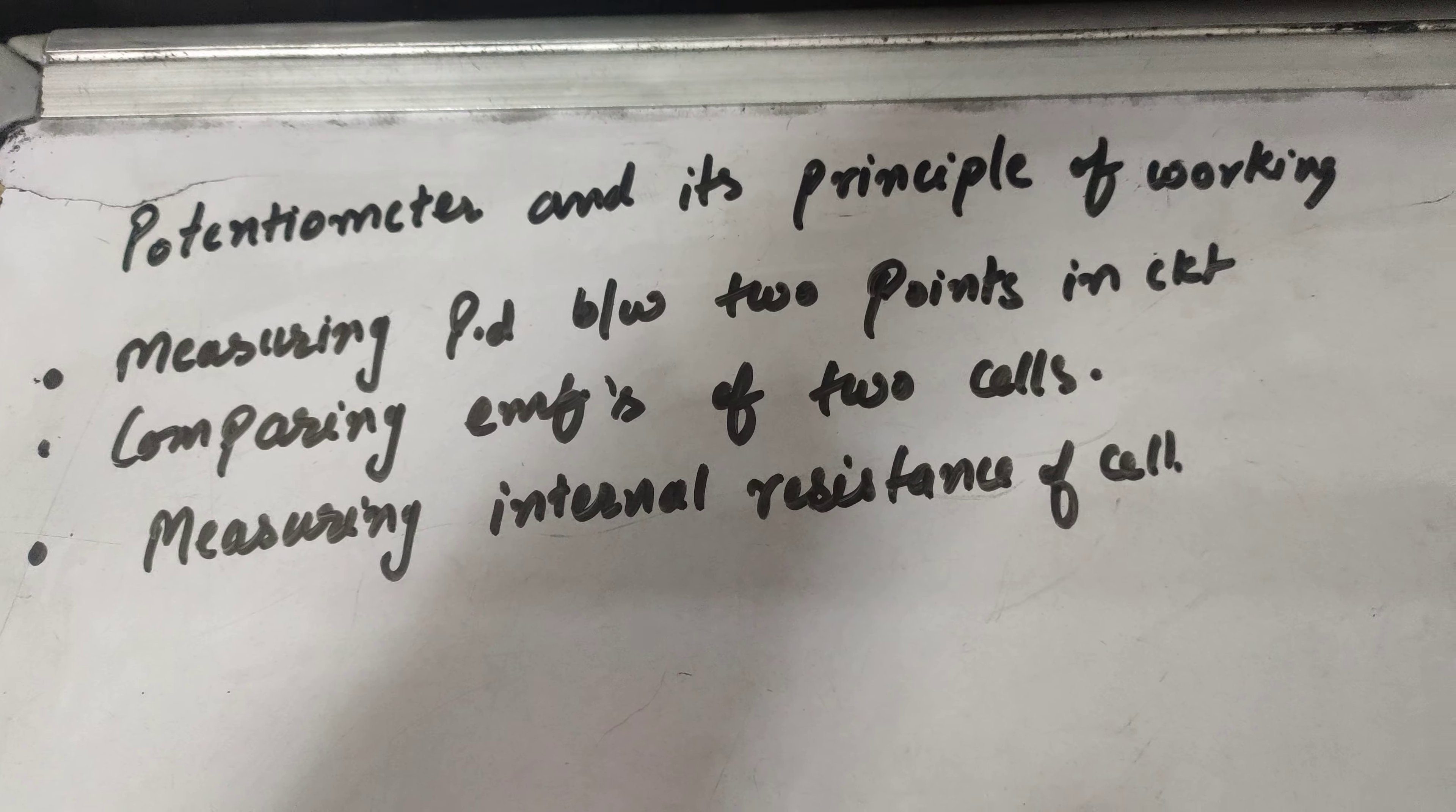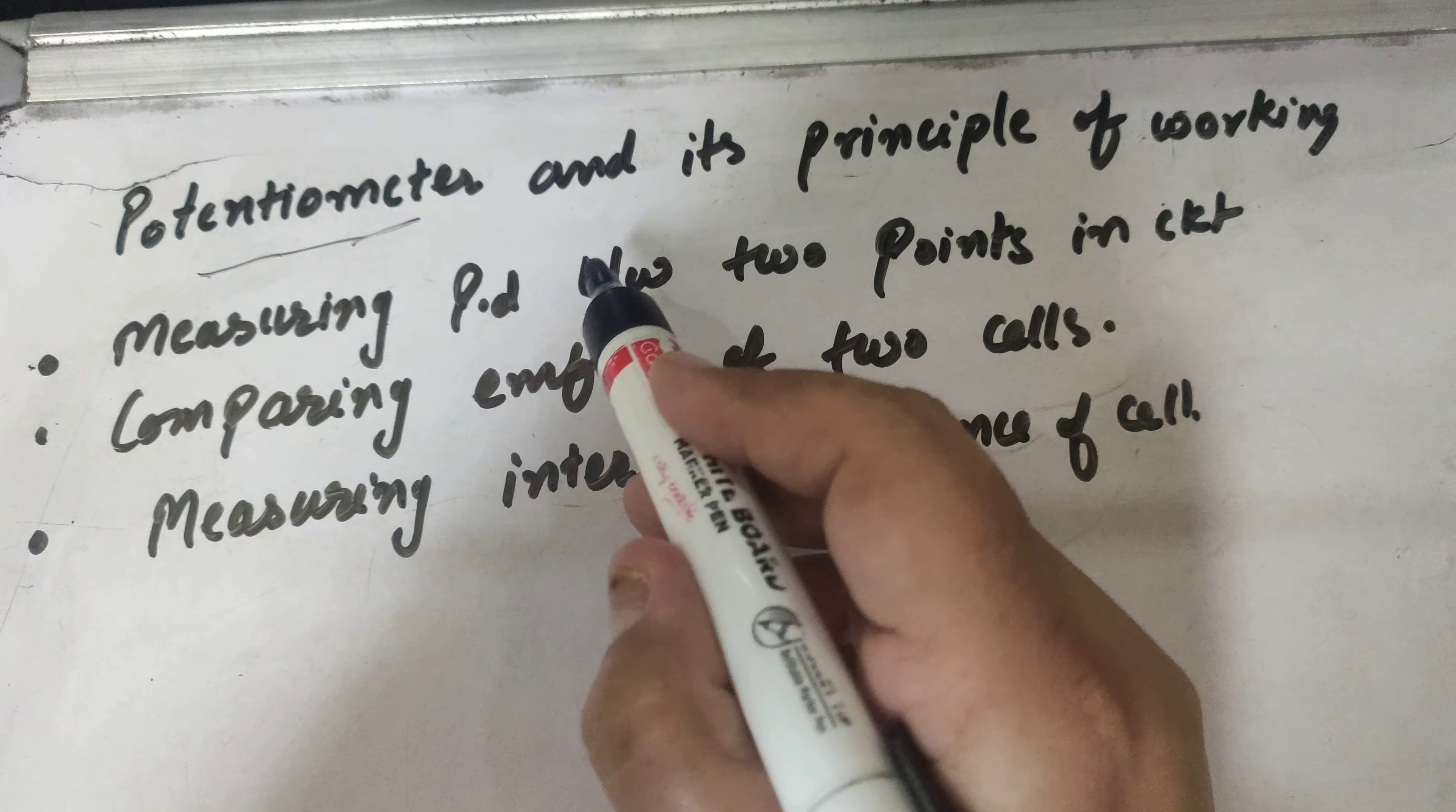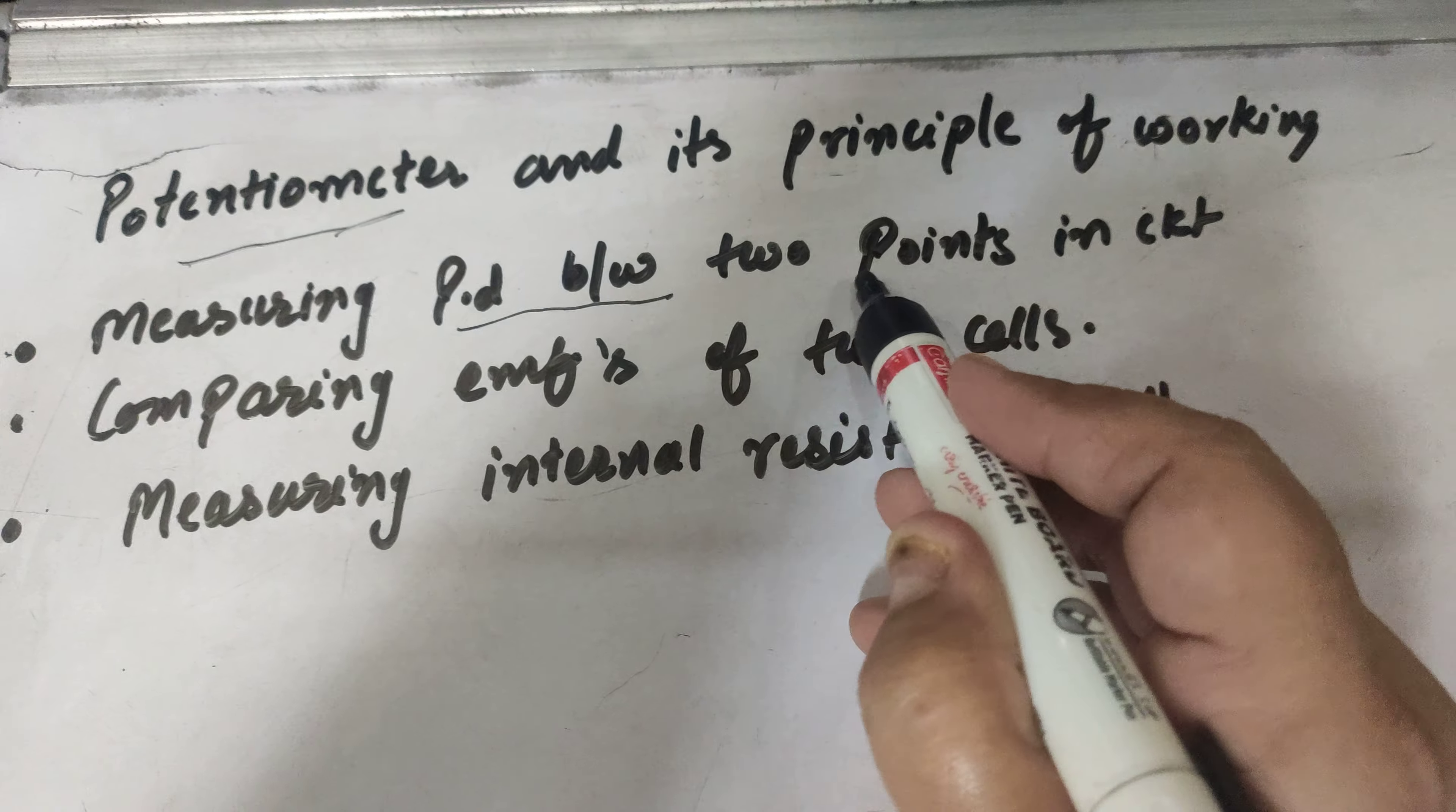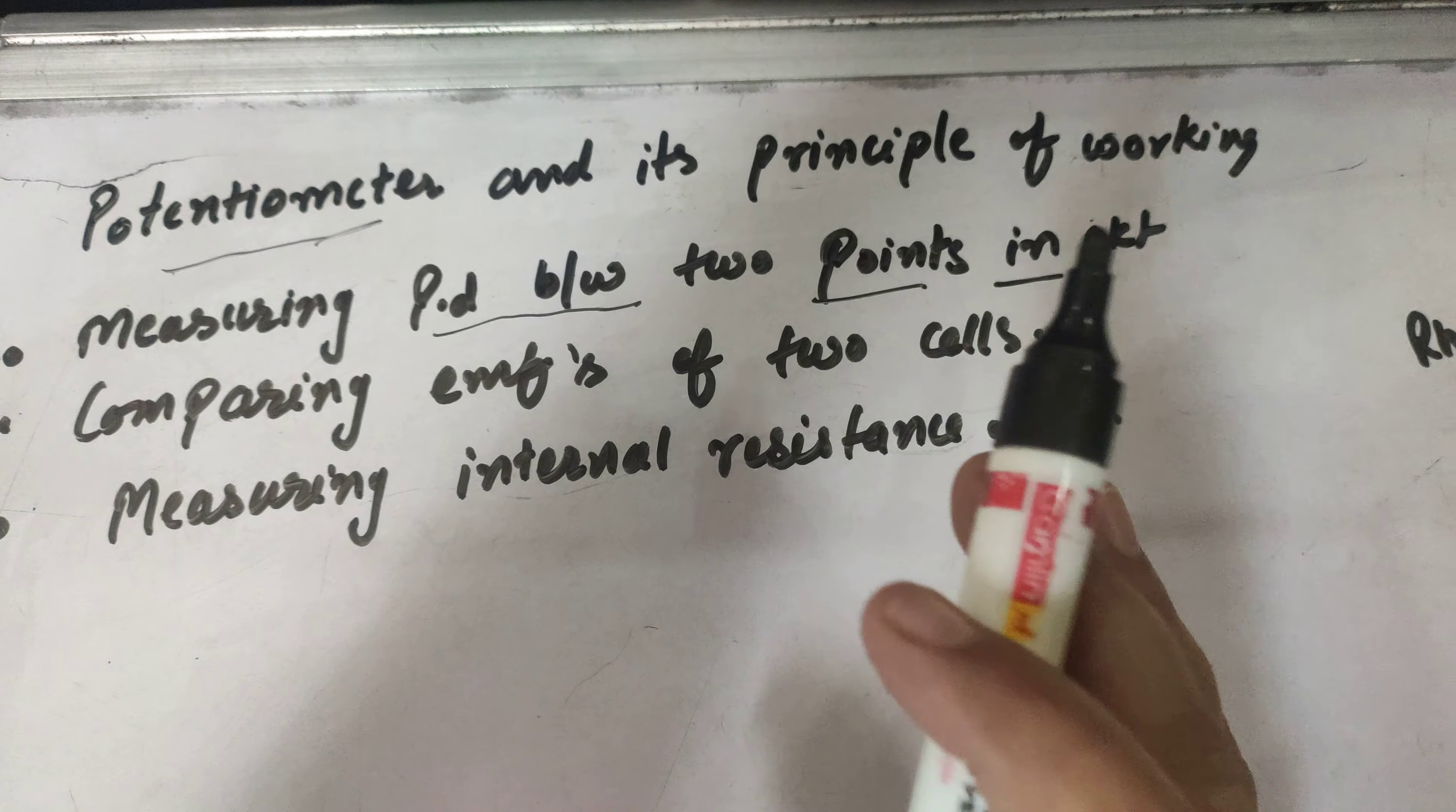Potentiometer and its principle of working. A potentiometer is an instrument used for measuring the potential difference between two points in a circuit very accurately, as compared to the voltmeter.